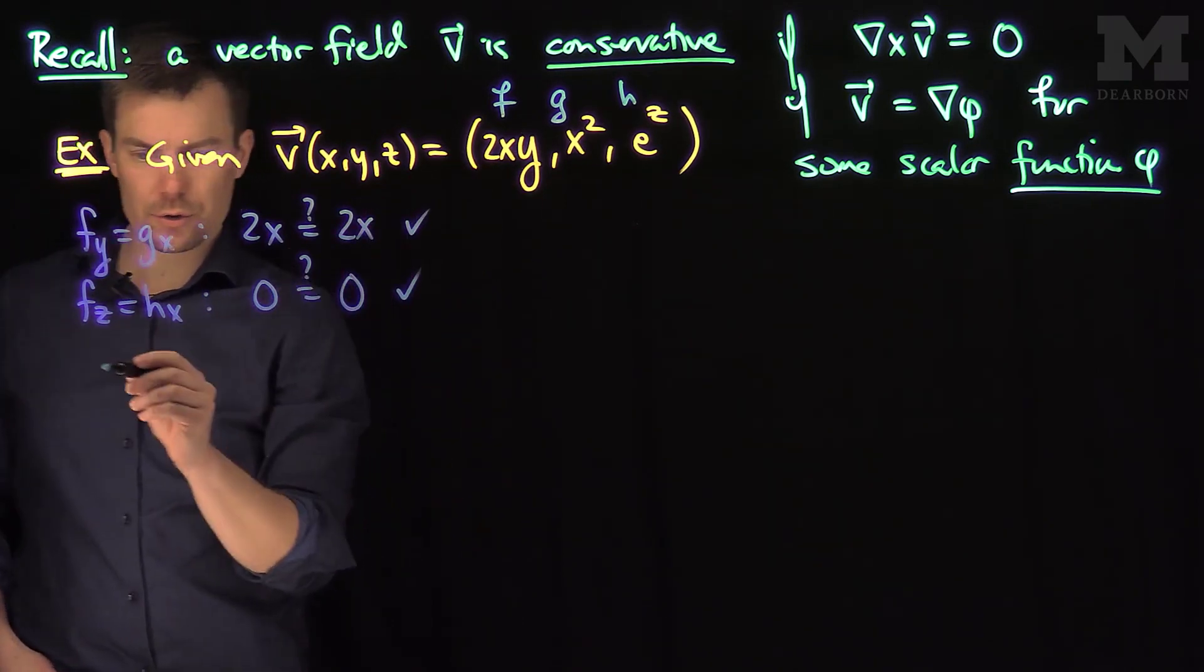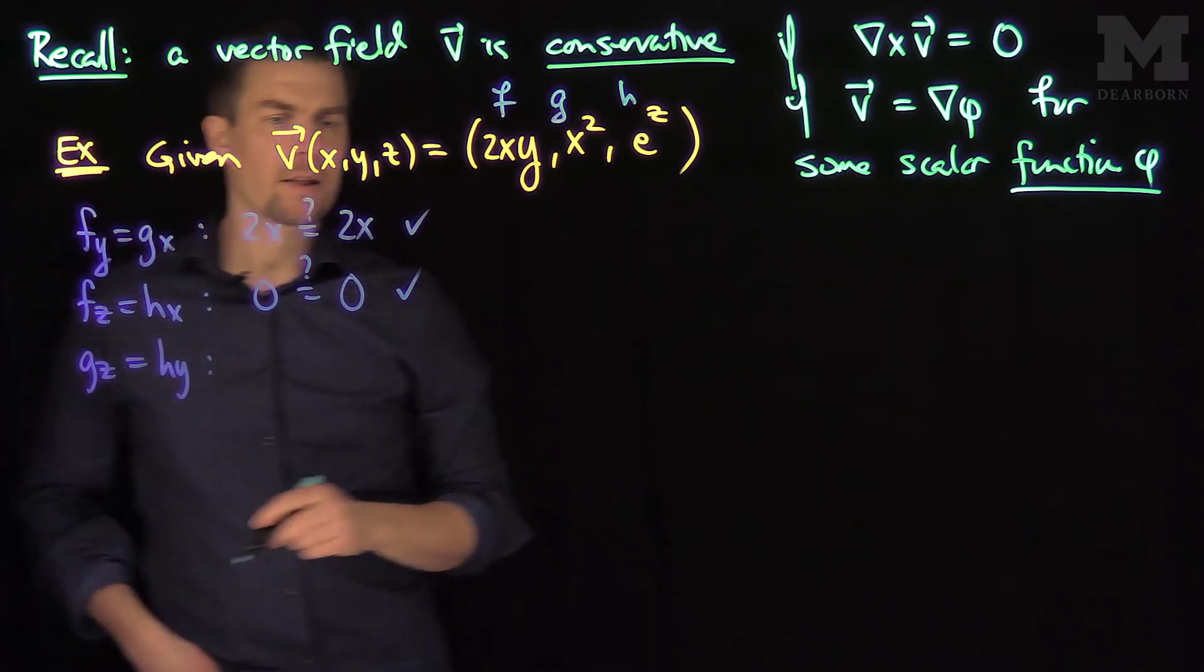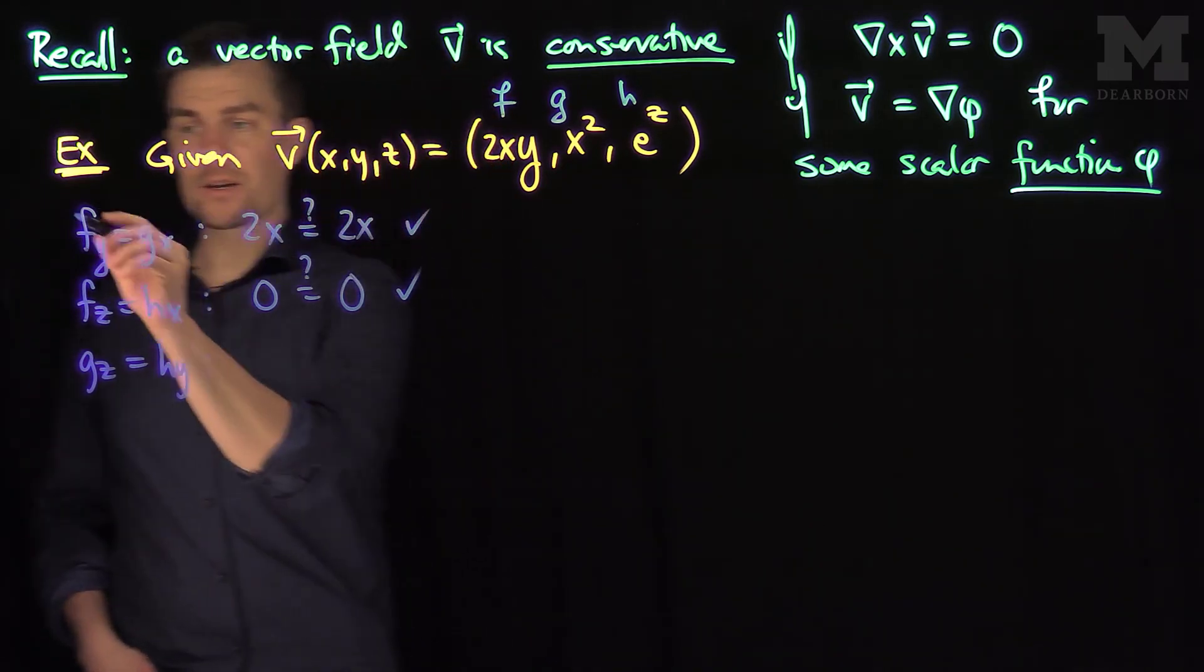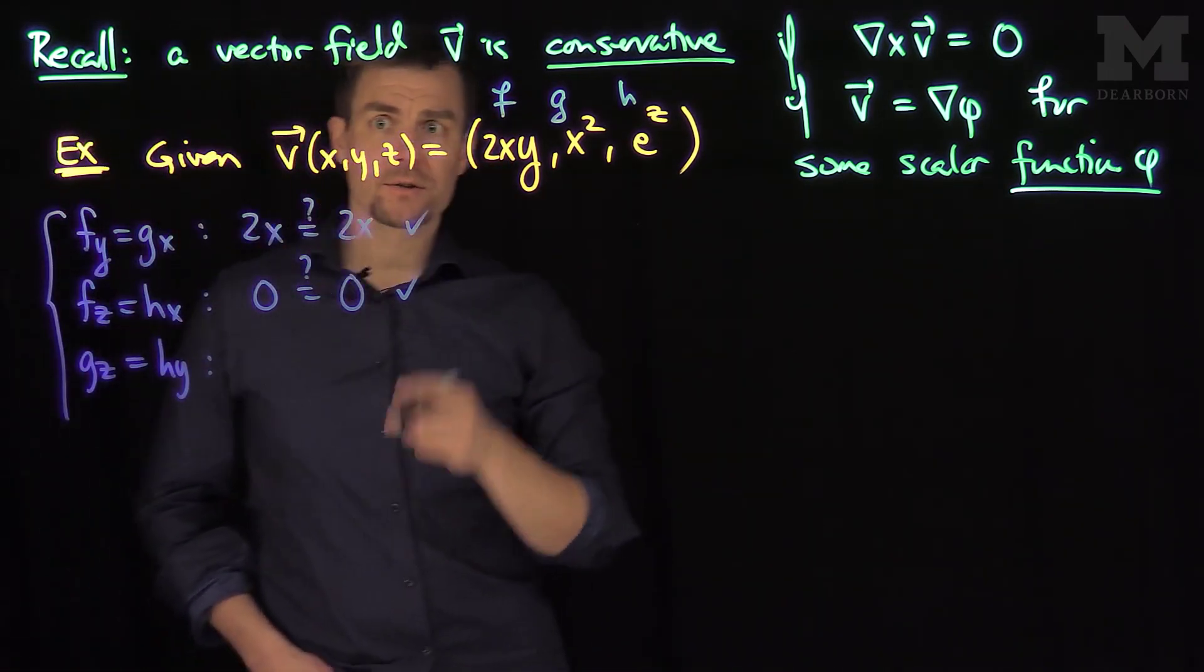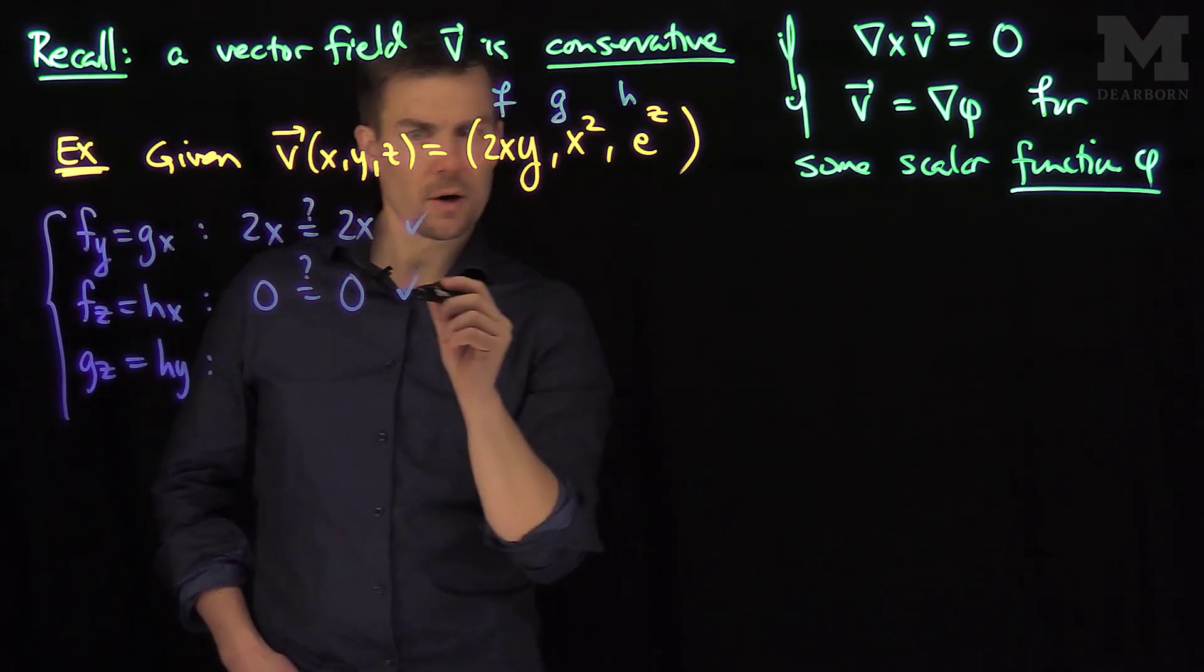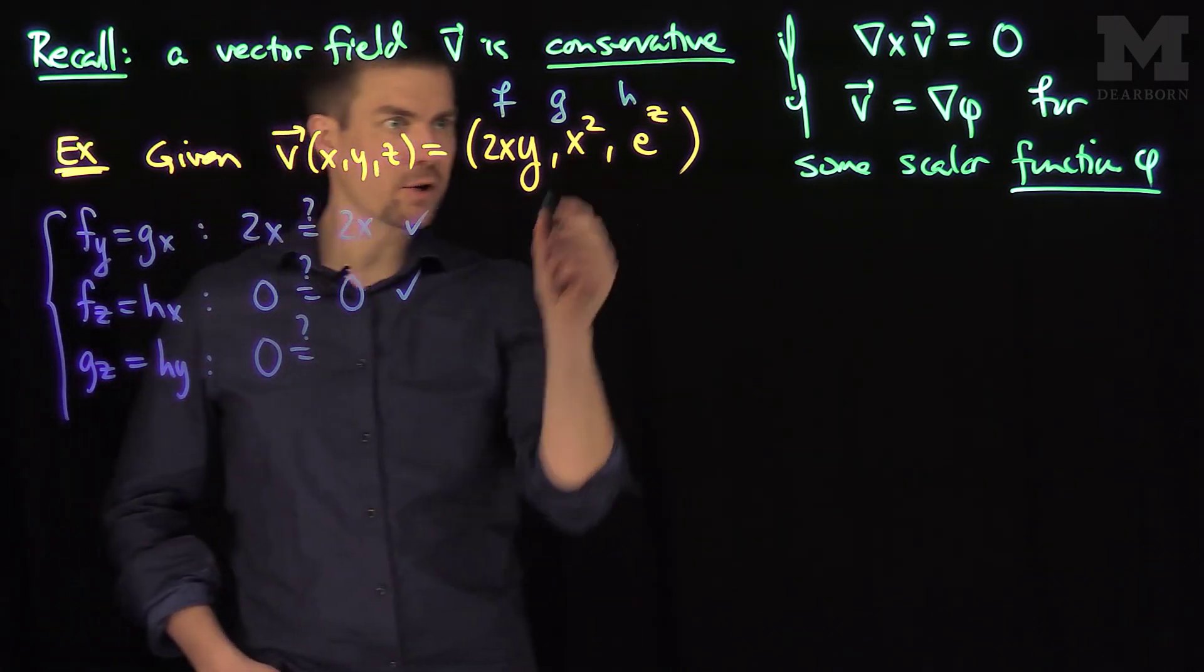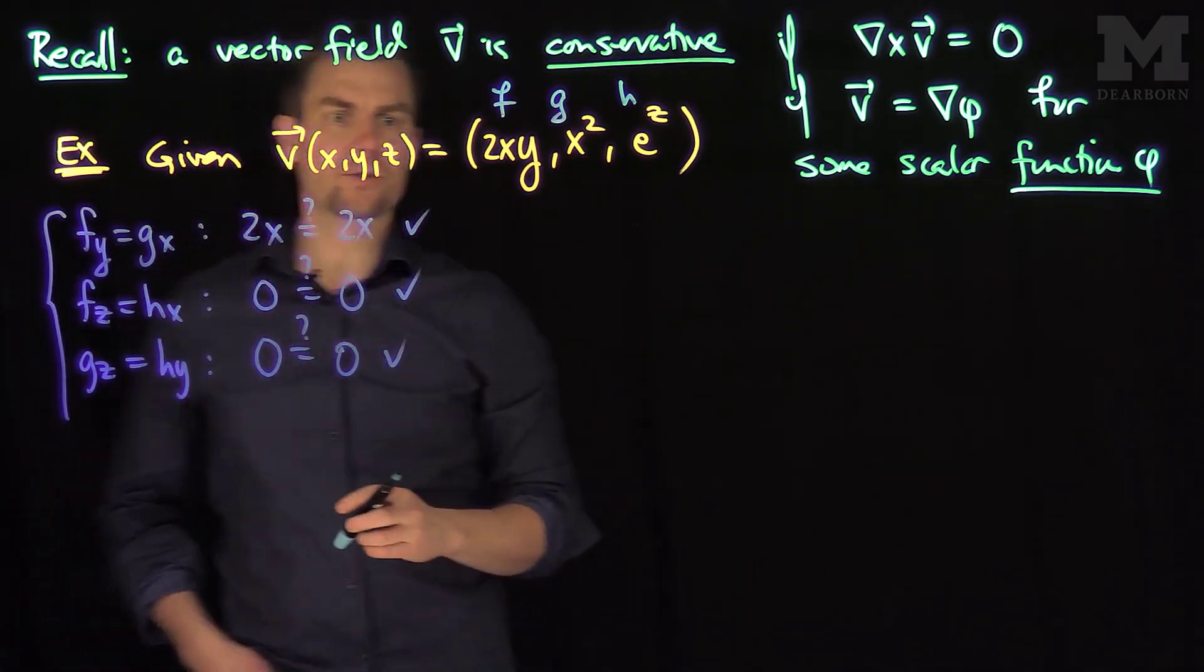And the final condition we need is that partial G partial Z is partial H partial Y. Let's check and see if this is true. So those are my three conditions to determine if a vector field is going to be conservative or not. Well, partial G partial Z is zero. Is that equal to partial H partial Y? That's also zero, so in fact it's true. Good.